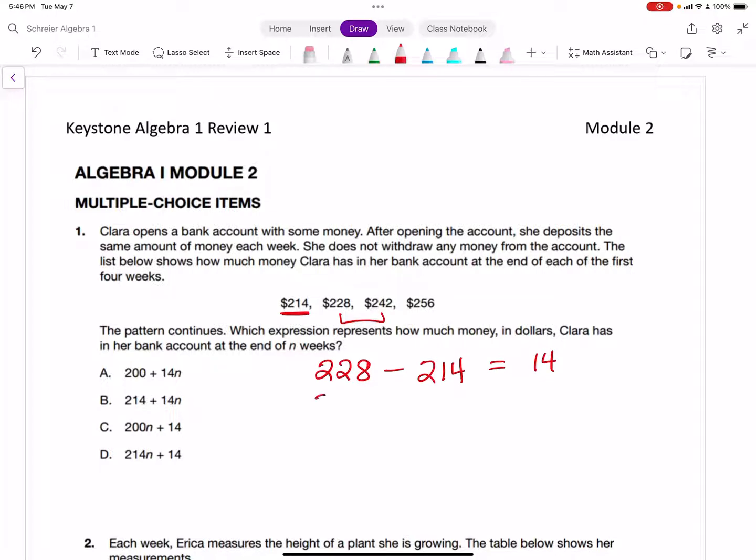So it's $242 minus $228, and that also gives us $14. She is depositing $14 every time, and she starts with this $214. In other words, she is going to take $214 and add $14 every week, and N is going to represent the number of weeks.